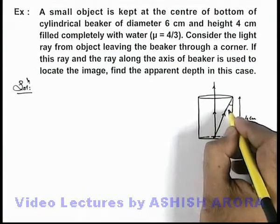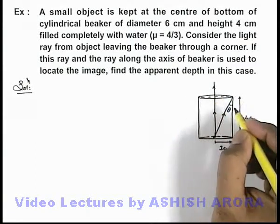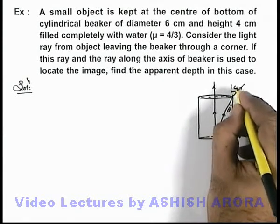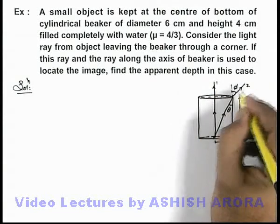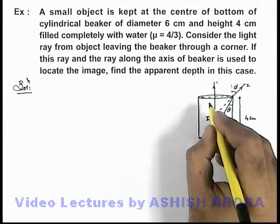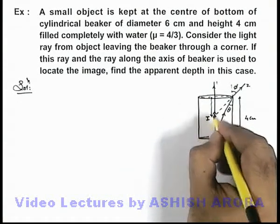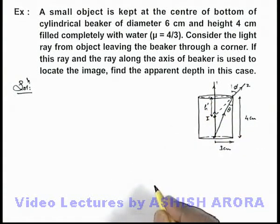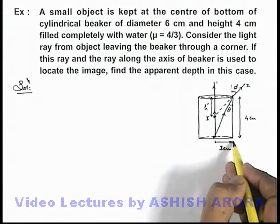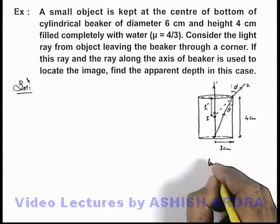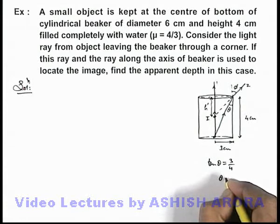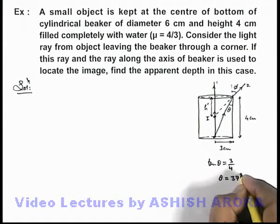The light ray incident at angle theta on the water surface, which is completely filled, will be bending away from the normal at angle phi. From these two rays, we can locate the image. Now, to find the apparent depth h prime, we first calculate the angles. Since the radius is 3 centimeter and height is 4 centimeter, the value of tan theta is 3 by 4. This implies the value of angle theta is tan inverse of 3 by 4, which is 37 degrees.